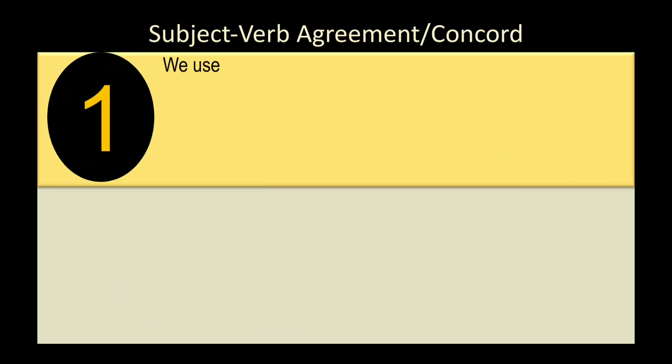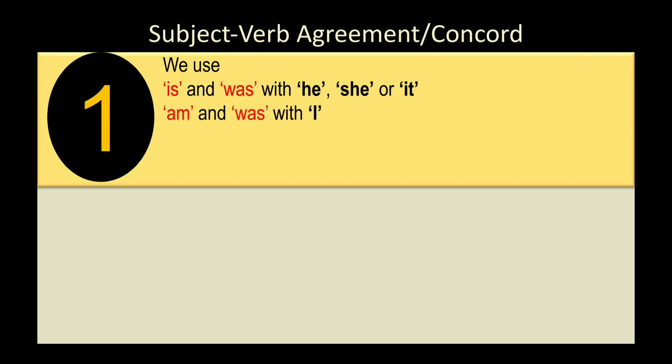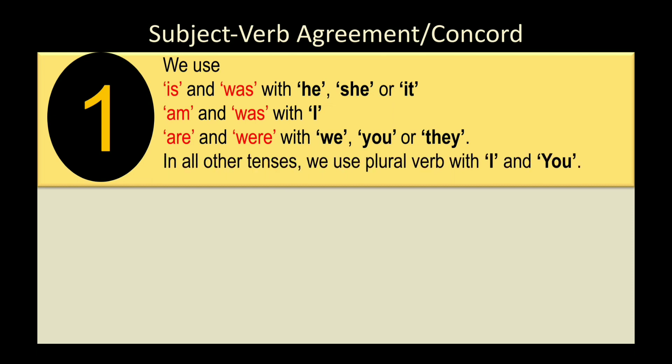Rule 1: If your subject is 'he,' 'she,' or 'it,' we use 'is' or 'was.' If the subject is 'I,' we use 'am' or 'was.' If the subject is 'we,' 'you,' or 'they,' we use 'are' and 'were.' In all other tenses, 'I' and 'you' are treated as plural subjects and take plural verbs.